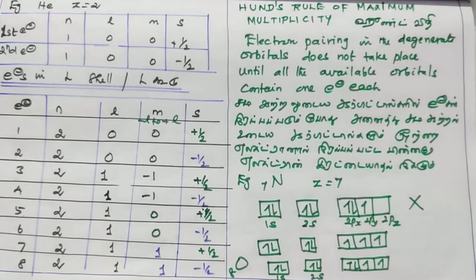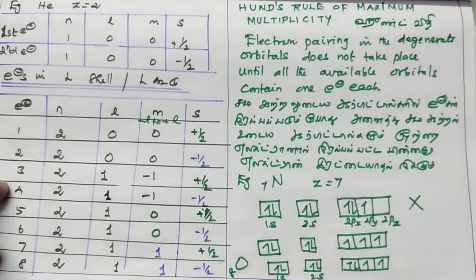Dear students, now we are going to discuss two important topics. Hund's rule of maximum multiplicity, and electronic configuration with electron pairing.